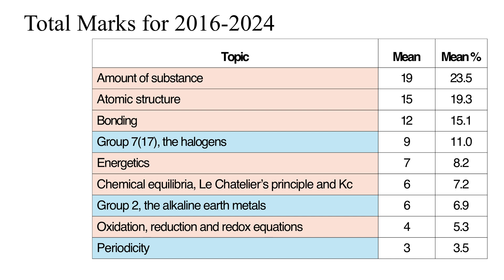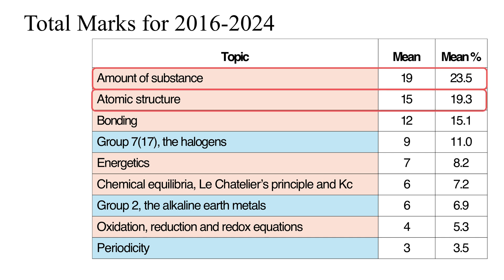Probably the best indication of which topics you ought to prioritize comes from the average number of marks available for a particular topic each year. There is an absolute clear winner: the amount of substance topic is on average worth 19 marks out of 80 each year — just under a quarter of the total marks. Next comes atomic structure, worth on average 15 marks out of 80, nearly 20% of the marks. In third place is bonding, worth 12 marks on average each year, which is 15% of the total marks.